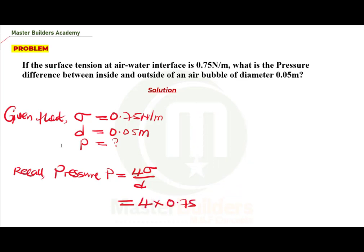Now when we multiply 4 by 0.75, this will give us 3 all over 0.05.